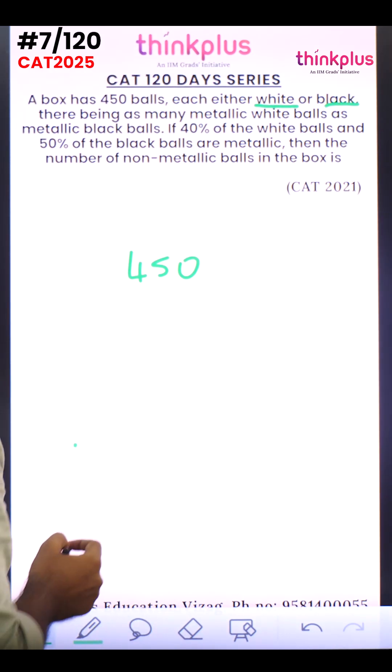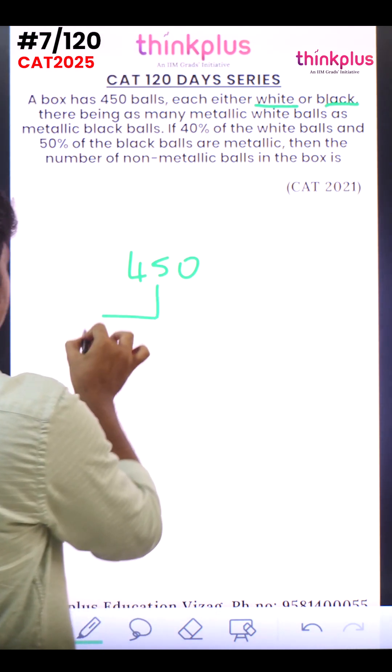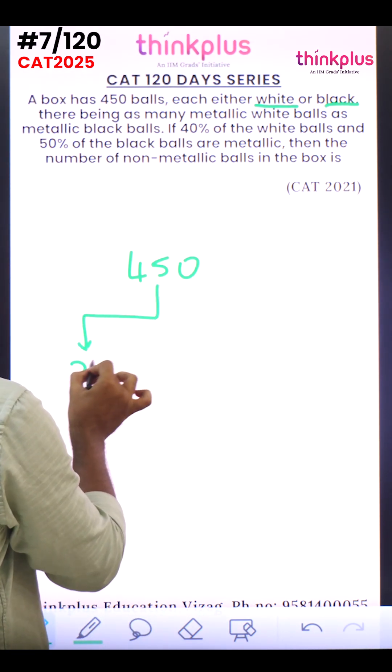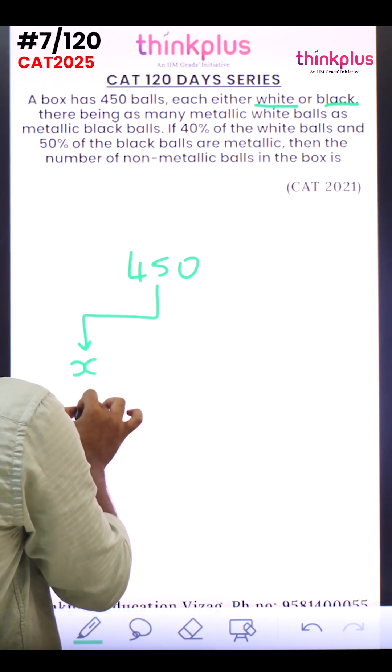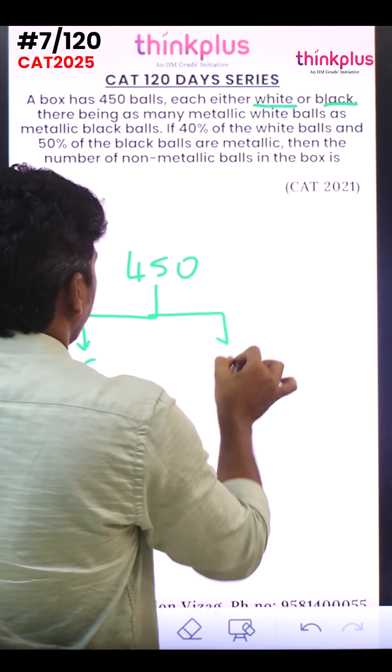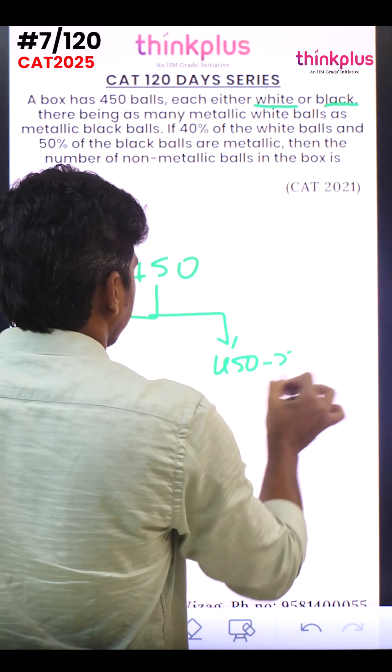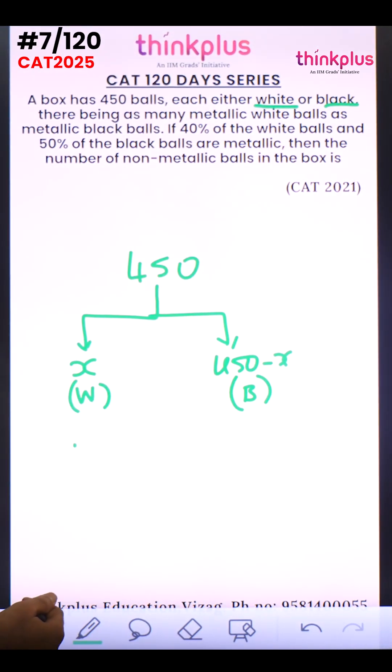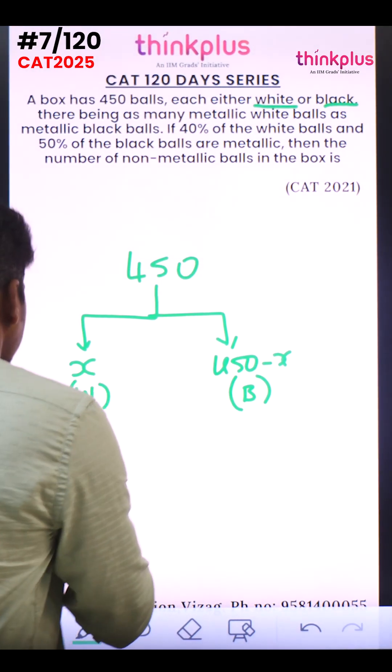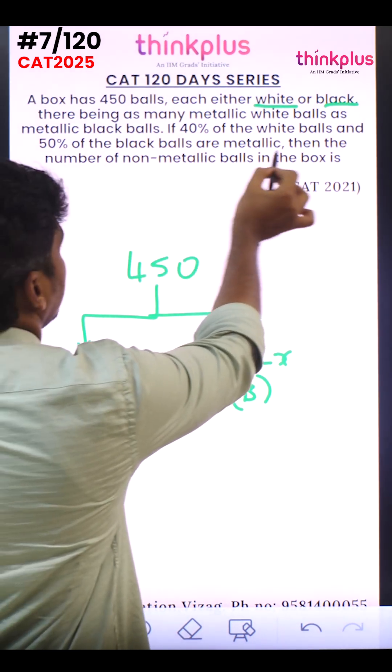Let's take x as white balls and 450 minus x as black balls. It is given that 40 percent of the white balls and 50 percent of the black balls are metallic.